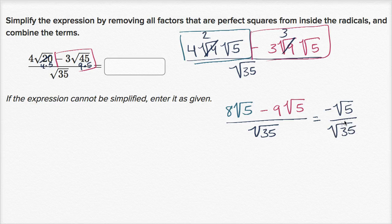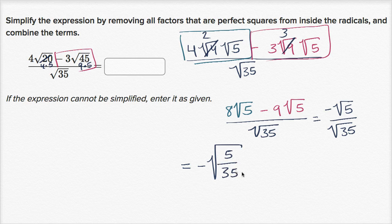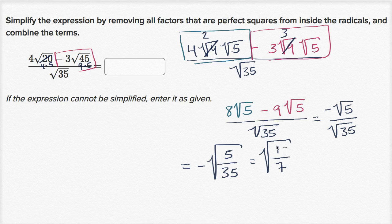I can simplify this even more. This is equal to the negative of the square root of five over 35. Both the numerator and the denominator are divisible by five, so we divide them both by five. Dividing the numerator by five gives one, and the denominator by five gives seven. So we can view this as the negative square root of one-seventh. And we are all done.